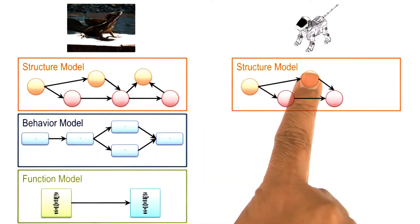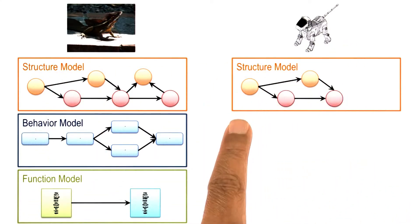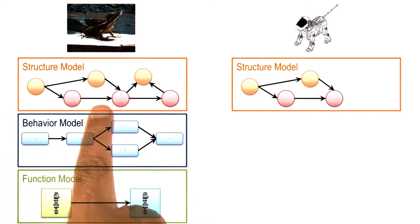Once we have aligned the structural models of the robot that can walk on ground and the basilisk lizard that can walk on water, then we can start doing transfer.